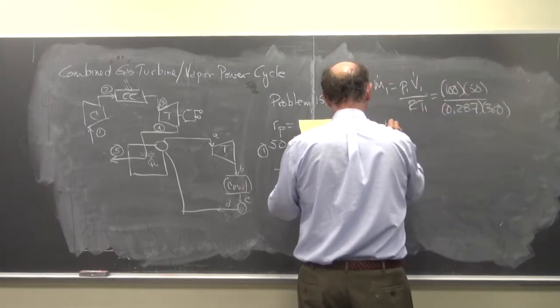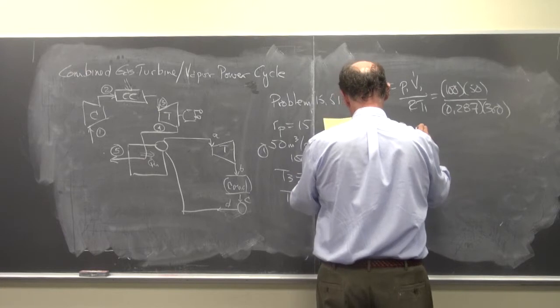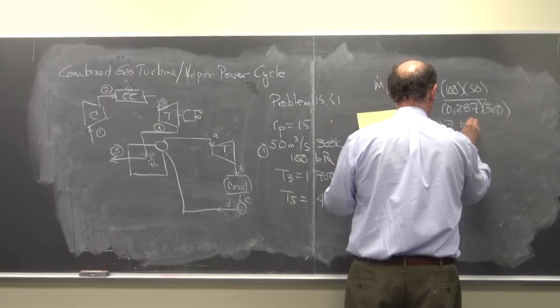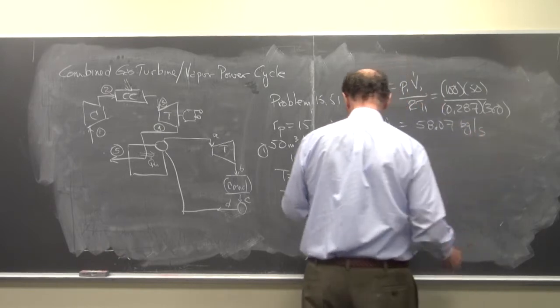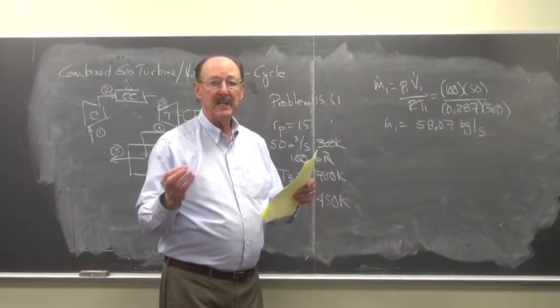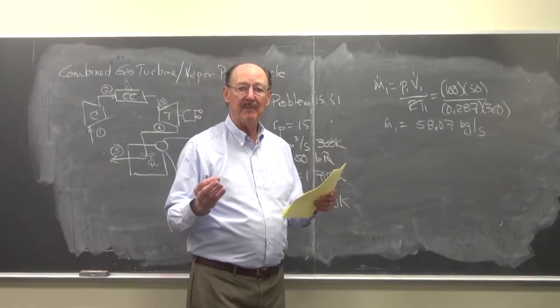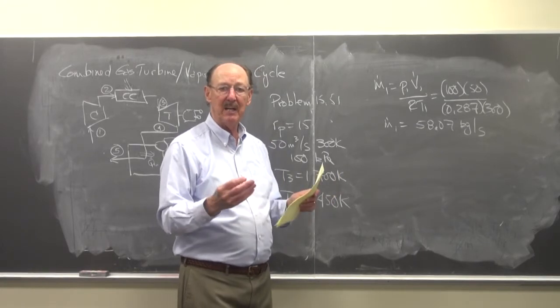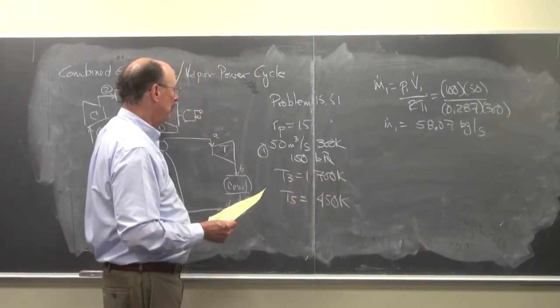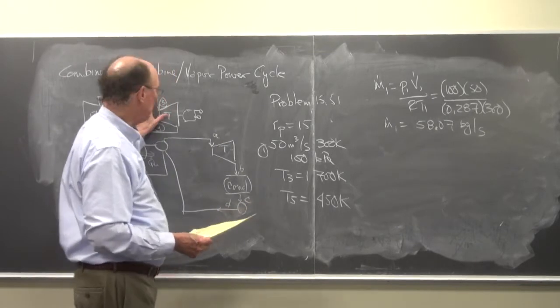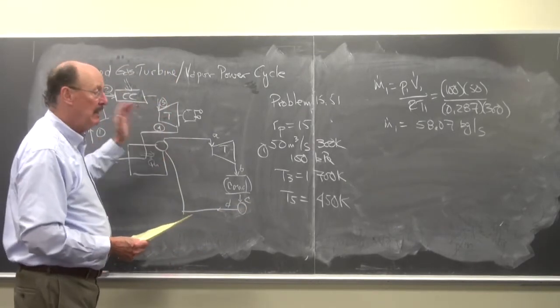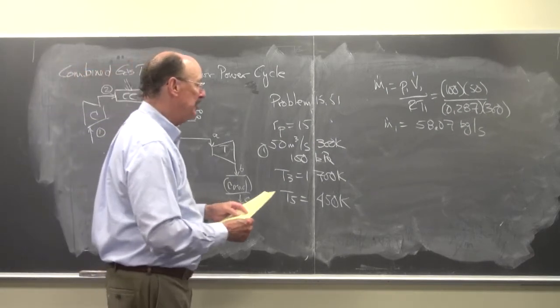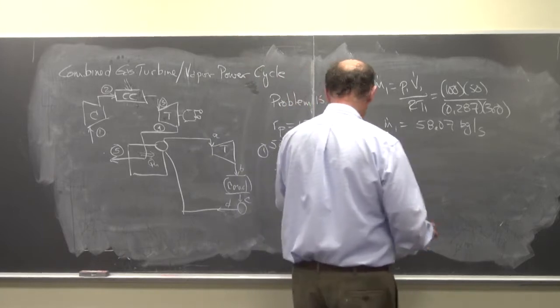So m dot 1 is P1V1 dot over RT1, which is 100 times 50 divided by 0.287 times 300. So m dot 1 is 58.07 kilograms per second. What we're doing here is we're neglecting the air-fuel ratio. We're doing this in a simplified format so you see how to do it. We're going to assume that the properties of the substance going through here are air, speeding up the gas turbine analysis to see how this combines with this vapor power system.